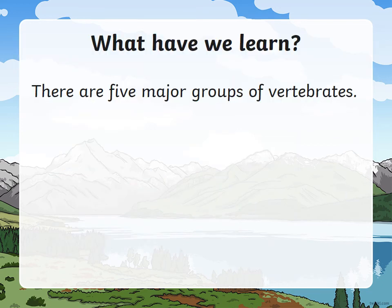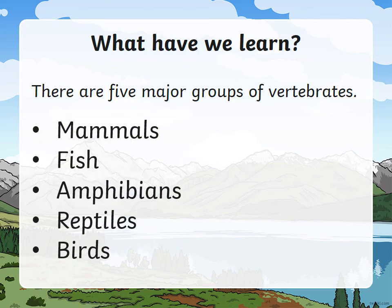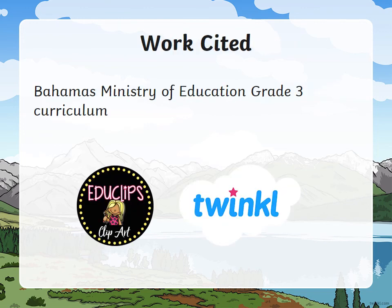What have we learned in this lesson? We learned that there are five major groups of vertebrates. Can you name them? They are mammals, fish, amphibians, reptiles, and birds. Excellent — give yourself a clap! This has been our lesson on vertebrates.